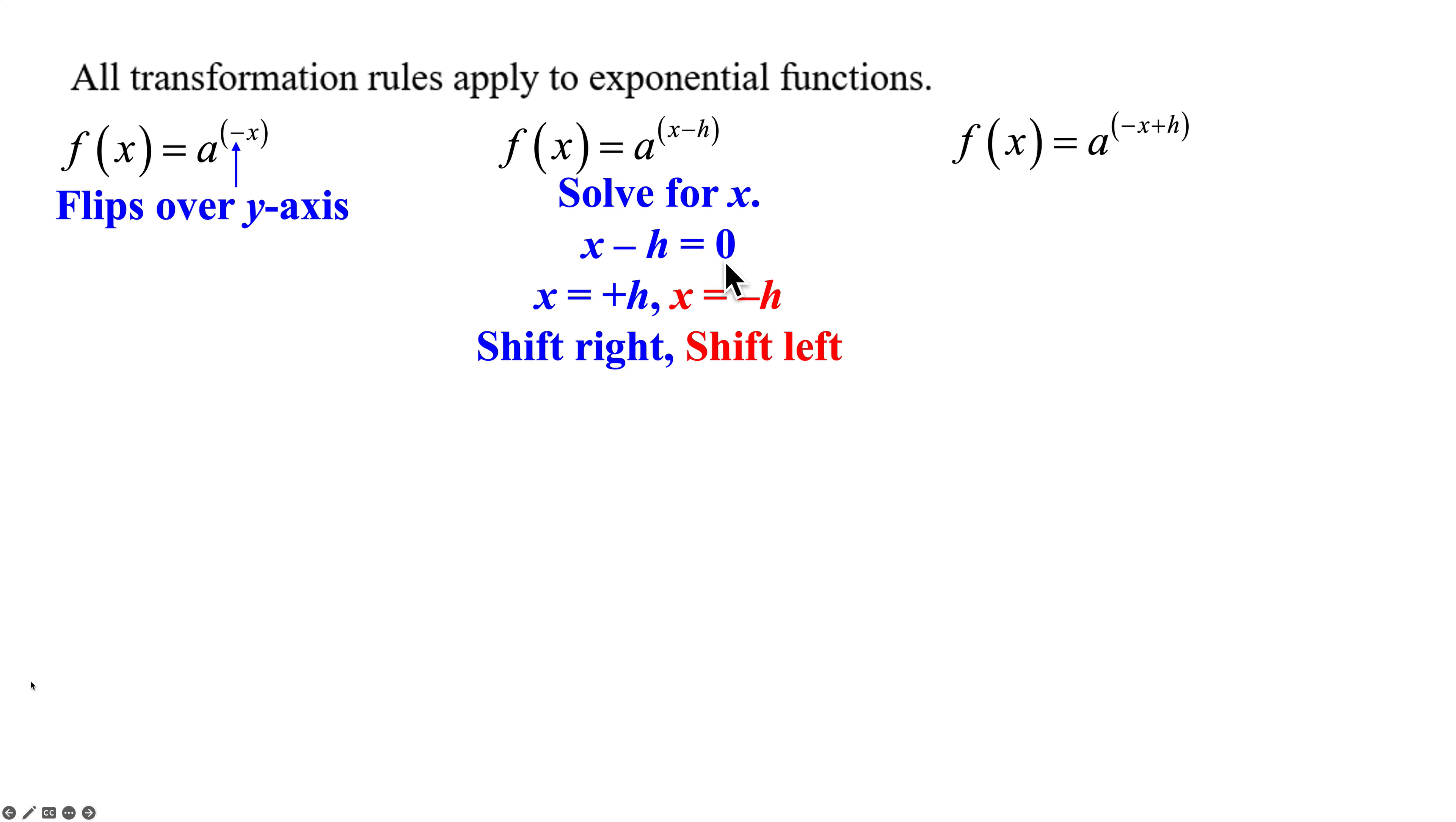Now they might combine these two together. So they might put the negative here in front of your x, that's still the flip over the y-axis. And here you would set this whole thing equal to zero and solve for x and still come up with the same. But they may factor the negative out, and that way you get your x minus h and everything still works out the same. You get the flip over the y-axis and you get your shift to the left or right.